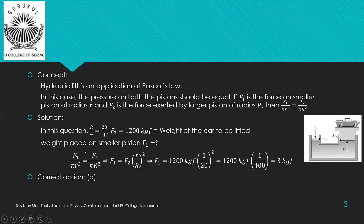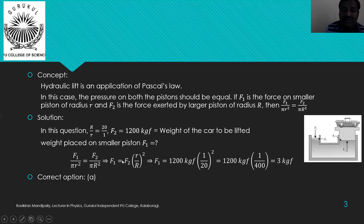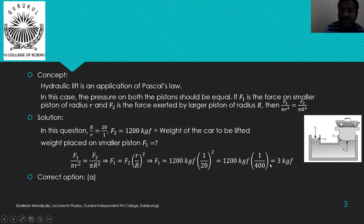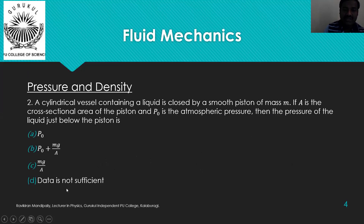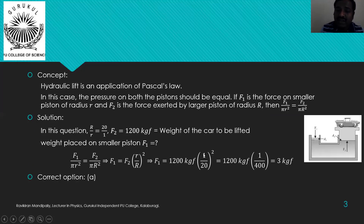Using the formula f1/(πr²) = f2/(πR²), we rearrange to get f1 = f2 × (r/R)². Here f2 = 1200 kg force and r/R = 1/20. So f1 = 1200 × (1/20)² = 3 kg force. The correct answer is option A.